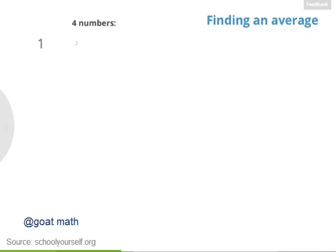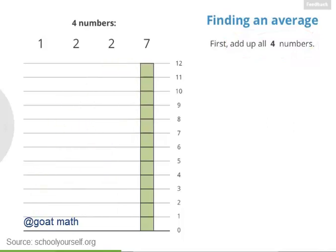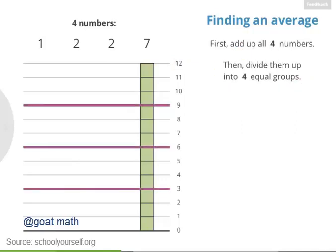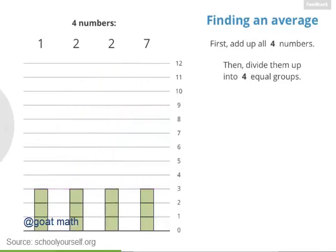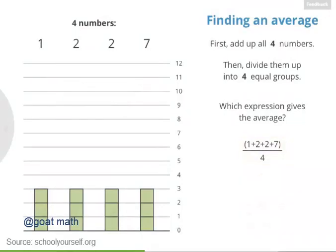Let's come up with a general strategy for calculating the average of a group of numbers. Suppose we have four numbers: 1, 2, 2, and 7. If we want to redistribute these blocks so all the stacks have the same height, first we can add the four numbers together — combining the stacks — giving us a height of 12. Then, to make four equal stacks, we divide this sum into four equal groups. So the average of these four numbers turns out to be 3. To find the average of a group of numbers, you can add them all up and then divide by how many numbers you have, which was 4 in this example.